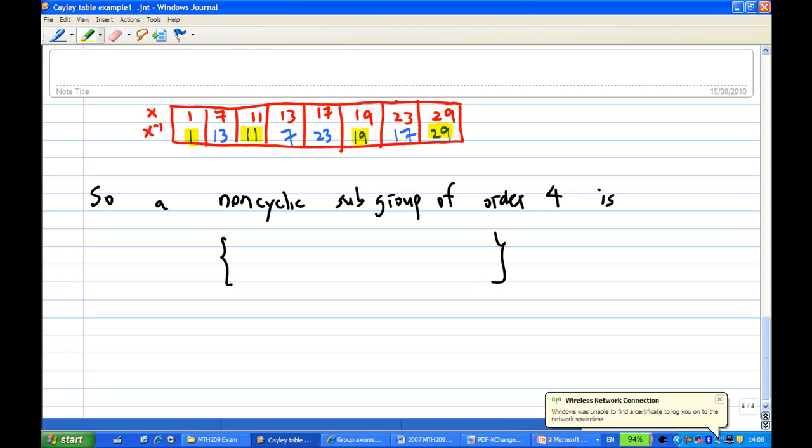So you pick these four elements: 1, 11, 19, 29. These four elements will form a subgroup of order 4 and it is non-cyclic because each element has order 2. That is the end of the recording.